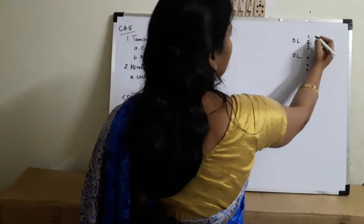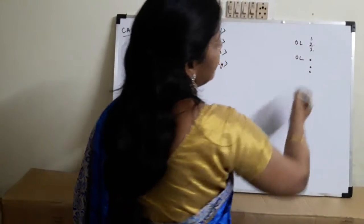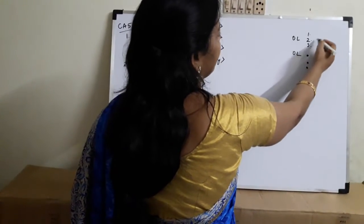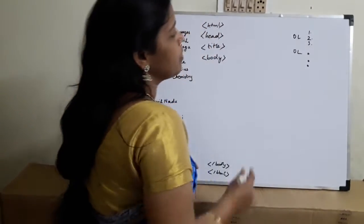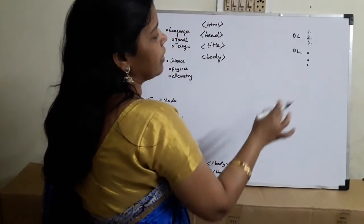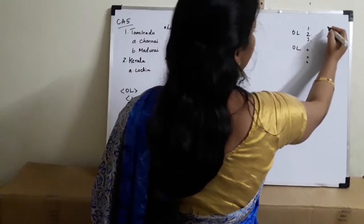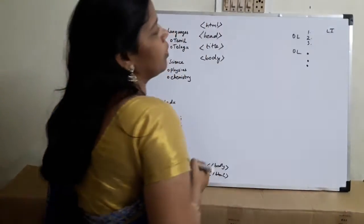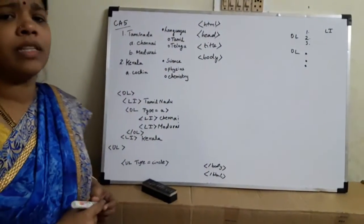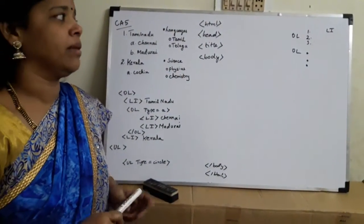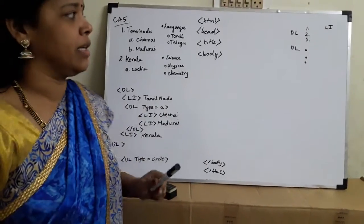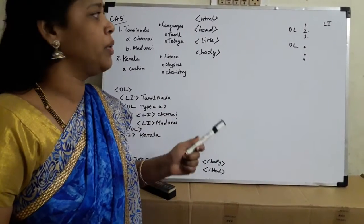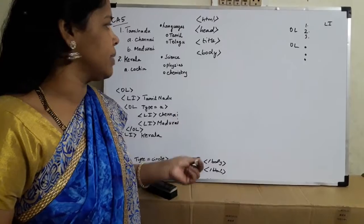For example, if it is a list of languages, you can write Tamil, English, Hindi, and so on. To represent each data item, we use another tag called LI, which stands for list item. So the three main tags we are going to use in this program are OL, UL, and LI.